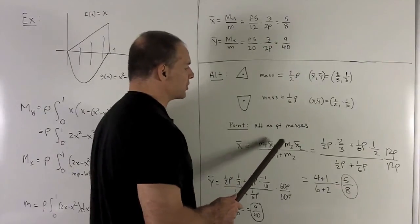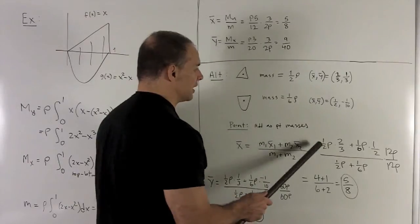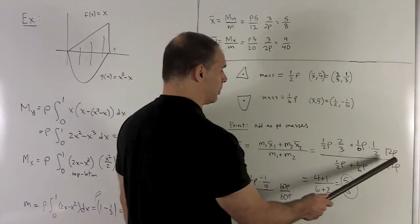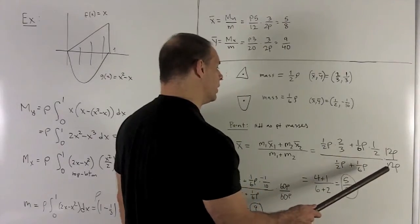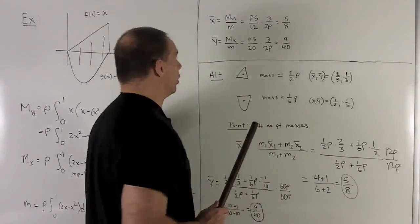My x-bar from before is just going to be given by add the moments for each point mass and then divide by the total mass. Well here, our x's are going to be two-thirds and one-half, and these are our masses. So we stick them in. Then you notice we can clean this out by multiplying by 12 rho over 12 rho, and that's going to leave me with five-eighths, which is what I had in the original answer.